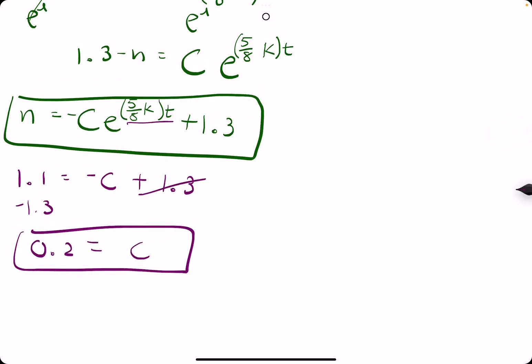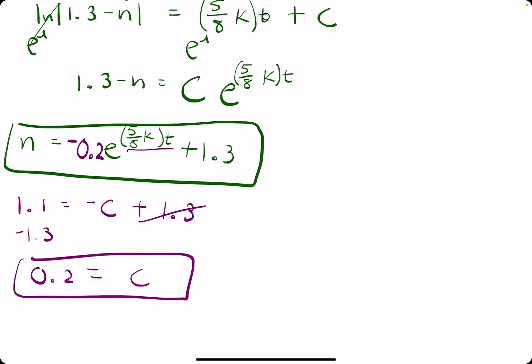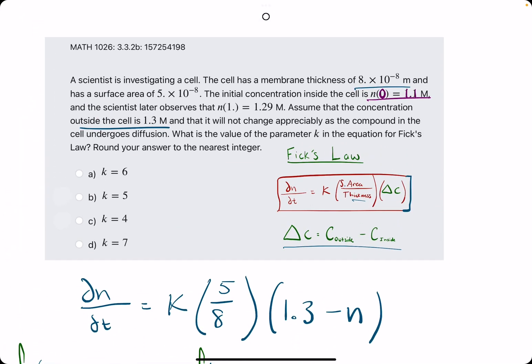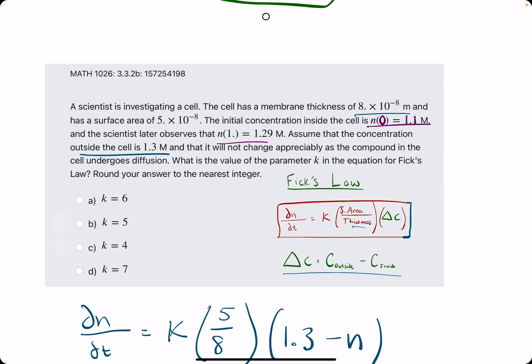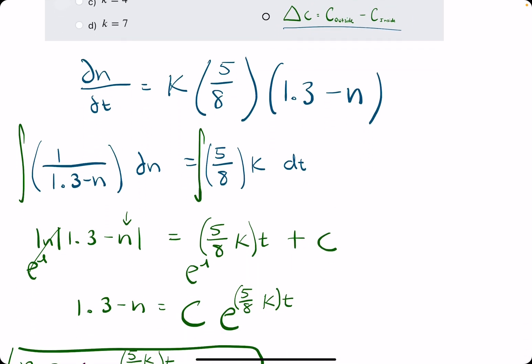Alright, so then we can plug in the positive 0.2 back in place of the c here. So, the negative was already there, so it will stay, but c is plugged in now. So, now is our last part, our last step of the whole process. We want to plug in t equals 1 and n equals 1.29.